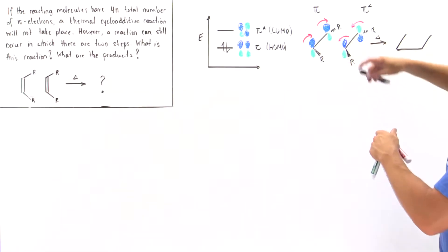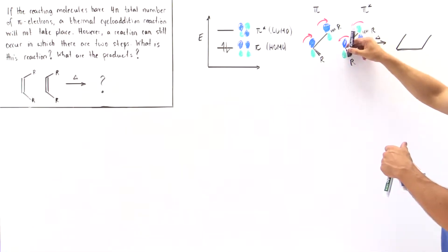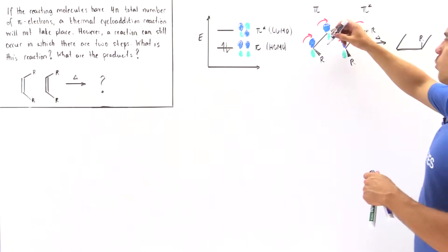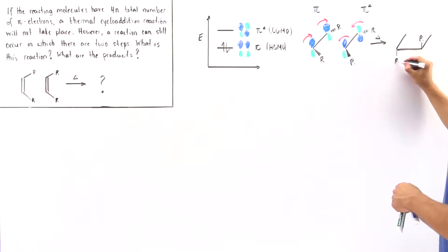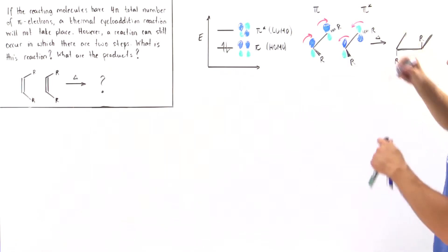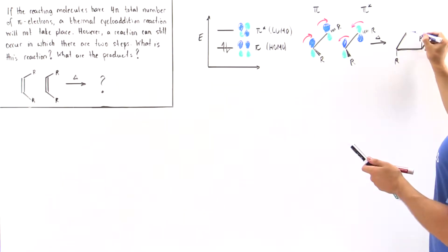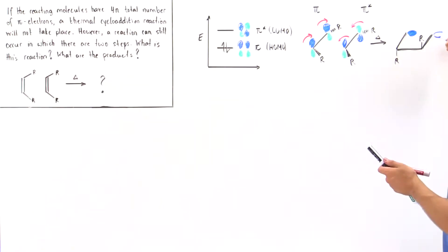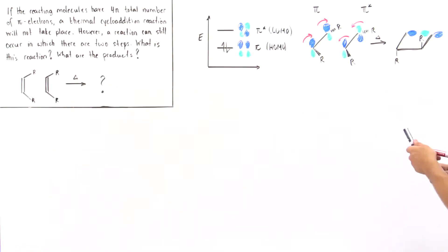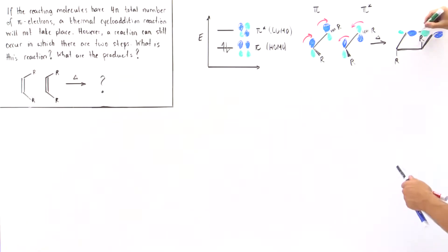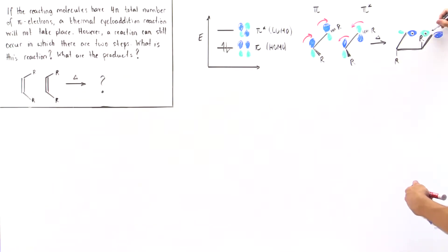When this rotation occurs, the R groups also change orientation. The R group that was pointing out of the board rotates upward, while the R group on the other carbon rotates downward. On the other side, however, there is no bond formed — because we have a blue lobe (negative phase) on one side facing a green lobe (positive phase) on the other. A positive and negative interaction is antibonding, so the two electrons in those lobes remain unpaired. This creates a diradical intermediate.